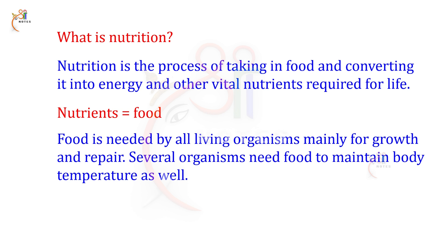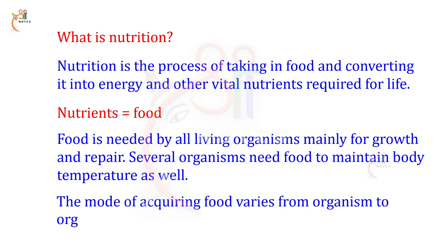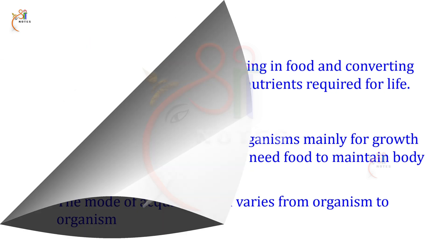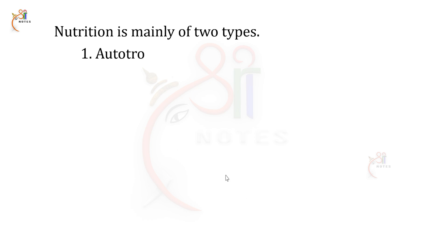Every living organism has a body temperature that needs to be maintained through nutrition. The mode of acquiring food varies from organism to organism — the nature of acquiring food is different from one living organism to another. Nutrition is mainly of two types: the first one is autotrophic nutrition, and the second one is heterotrophic nutrition.